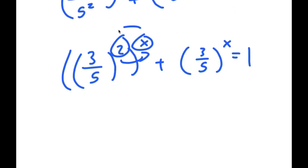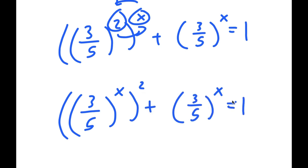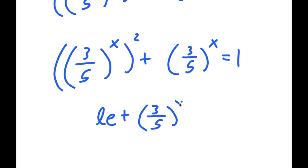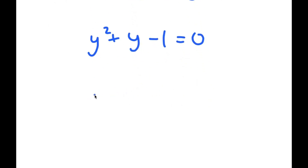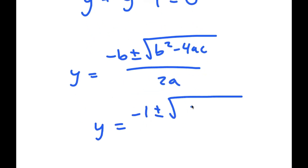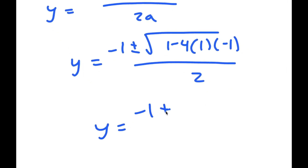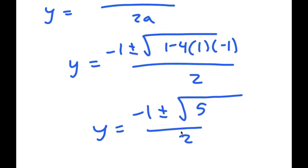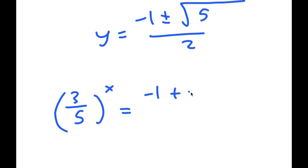I can swap the places of these terms, so I get (3 over 5) to the power of x to the power of 2 plus (3 over 5) to the power of x equals 1. I'm going to let (3 over 5) to the power of x equal y. So now I have y squared plus y minus 1 equals 0. Using the quadratic formula — negative b plus or minus the square root of b squared minus 4ac all over 2a — I get y equals negative 1 plus or minus the square root of 5, all over 2. So (3 over 5) to the power of x equals (negative 1 plus the square root of 5) over 2.